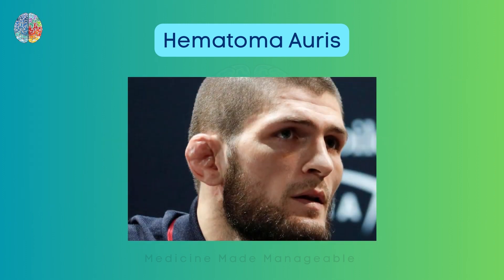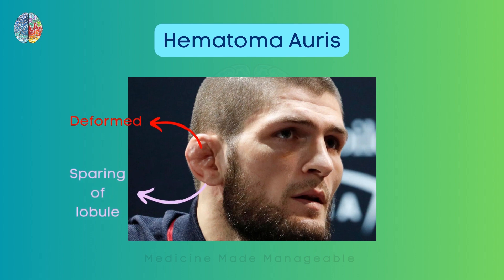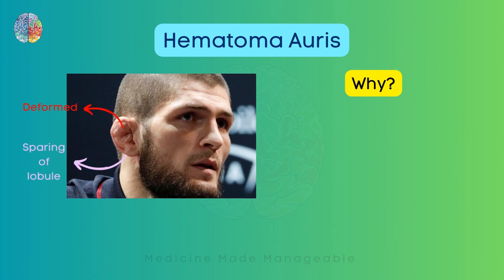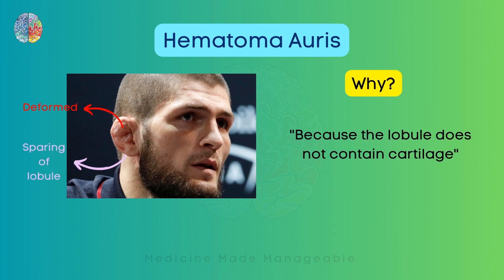This is another example of cauliflower ear in a famous UFC fighter — you can see the auricle is deformed. Note that in this condition also, there is sparing of the lobule. This is because the lobule does not contain cartilage or perichondrium, only fat — so hematoma auris cannot occur there.